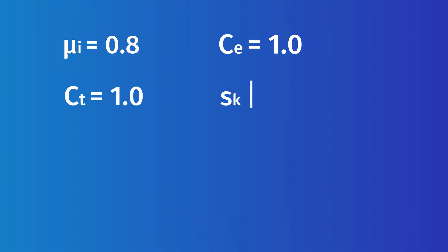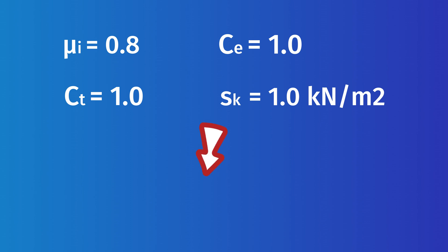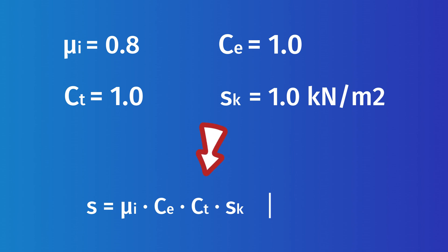Now we have all four values required to calculate the characteristic snow load of a flat roof. Inserting all those values into our formula, the snow load for a flat roof located in Copenhagen, Denmark is calculated as 0.8 kN per square meter.